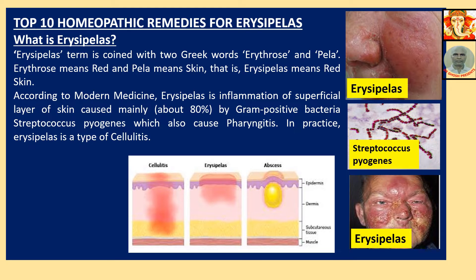According to modern medicine, Erysipelas is inflammation of the superficial layer of skin caused mainly by Gram-positive bacteria, which also cause Pharyngitis. In practice, Erysipelas is a type of Cellulitis.